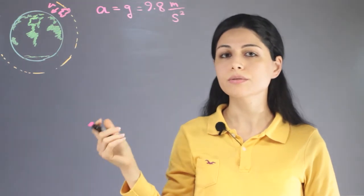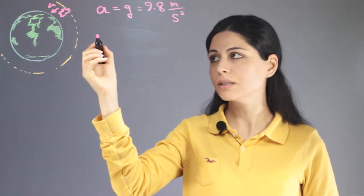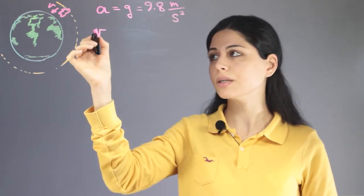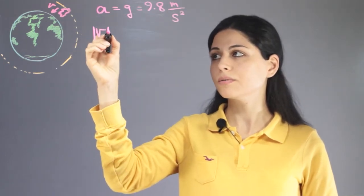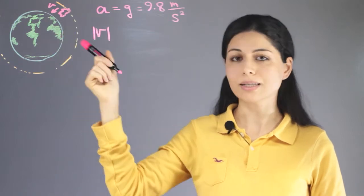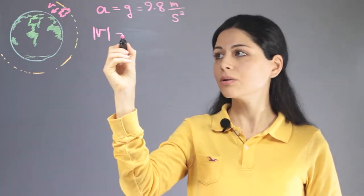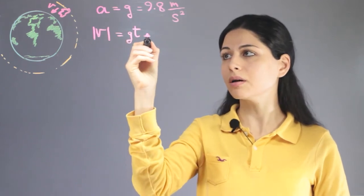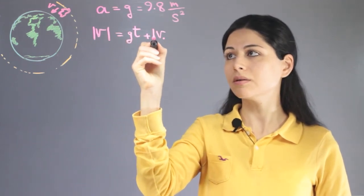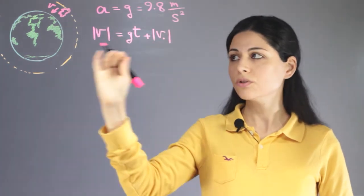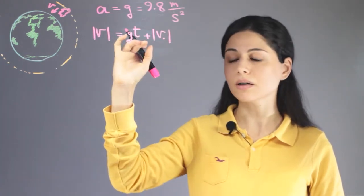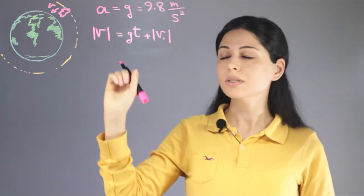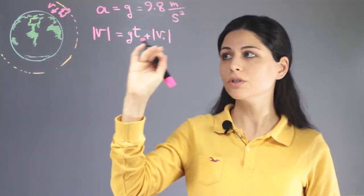Based on kinematic formulas, the instantaneous velocity magnitude, considering the absolute value of the velocity of the asteroid at each time, is equal to g times time plus the initial velocity. This shows that as time passes, the velocity increases.